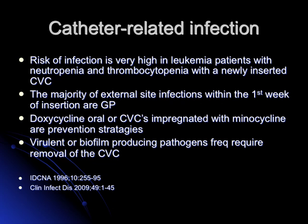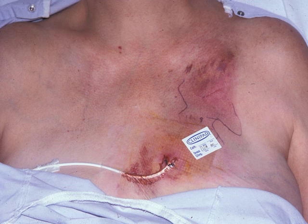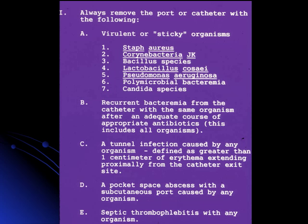When an aggressive organism infects the line, we have to remove it. Regarding when to remove a port: enterobacteriaceae can translocate from the GI tract to blood without signifying true port infection, given that patients have enteritis from chemo and antibiotics. However, some organisms indicate true port infection and the port must come out — including Staph aureus, Corynebacterium jeikeium, some Bacillus species, Lactobacillus, Pseudomonas, polymicrobial bacteremias, Candida species, recurrent bacteremias, port abscess, and septic phlebitis.